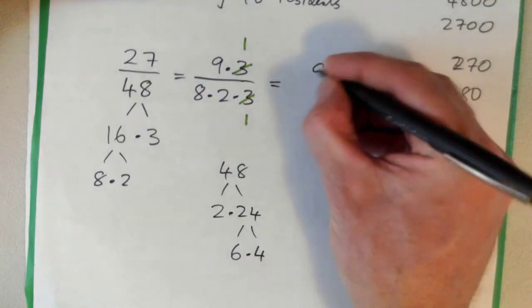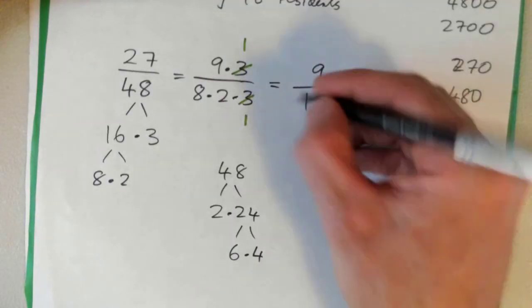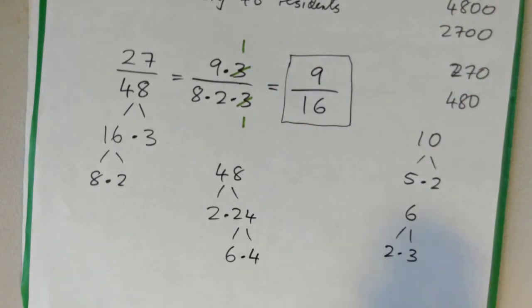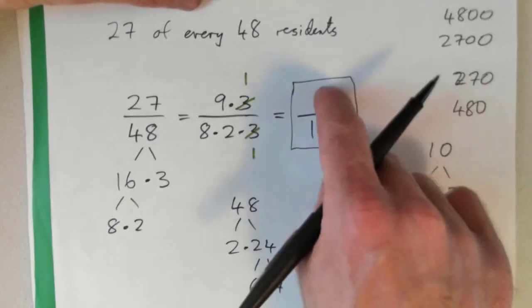So 9 times 1 is 9, 8 times 2 is 16, times 1 is 16. So then the answer is just 9/16ths. An easy way to say the sentence is, for every 16 residents, 9 are male, if that makes sense.